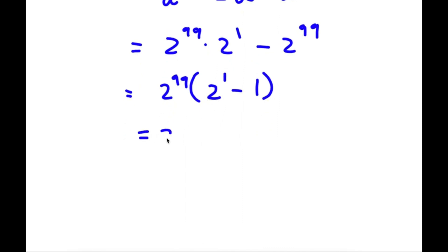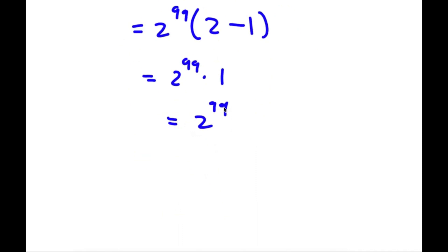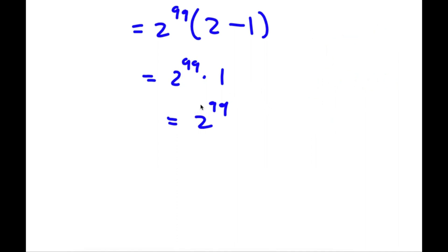Now 2 to the power of 1 is 2, so I have 2 to the power of 99 times 2 minus 1. And 2 minus 1 is simply 1, so I have 2 to the power of 99 times 1, which is just 2 to the power of 99. This is going to be a really big number — since 2 to the power of 10 is already 1,024 and every new power doubles the previous one, 2 to the power of 99 is enormous. So 2 to the power of 99 is as far as I can simplify.